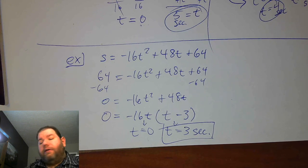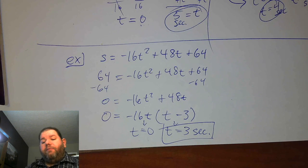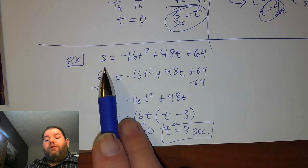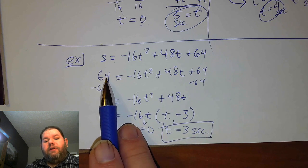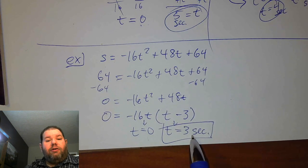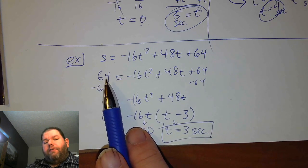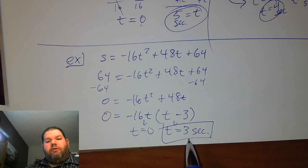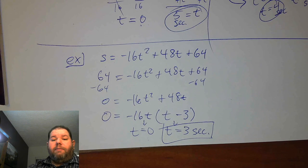Today we're going to look at section 1.3. We don't have to plug the answer back in here because we started with the concept that we're already at a height of 64 feet — we're just determining how long it takes to come back to that point after throwing the ball upward.